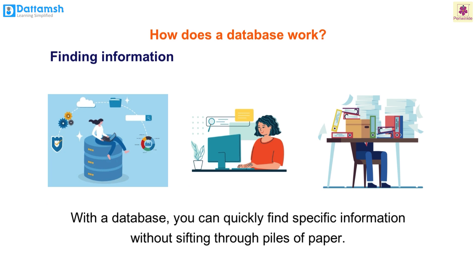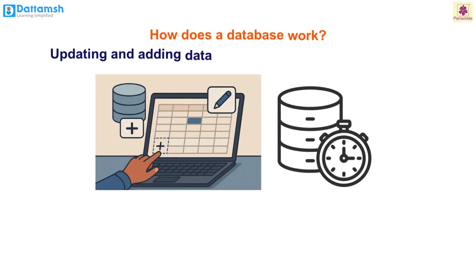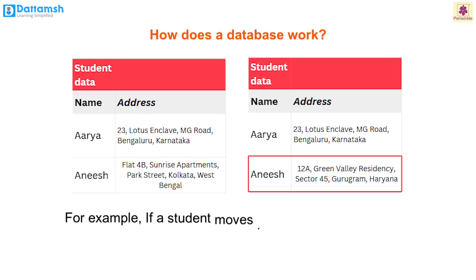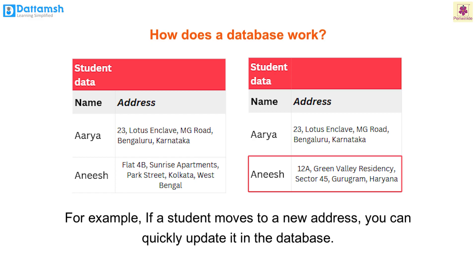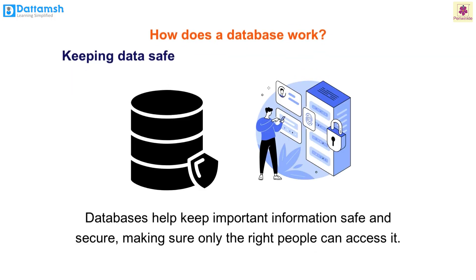Finding information: with a database you can quickly find specific information without shifting through piles of papers. For example, if you want to find a student's address, you can search the database and get the answer instantly. Updating and adding data: databases make it easy to add new information or update existing details. For example, if a student moves to a new address, you can quickly update it in the database.